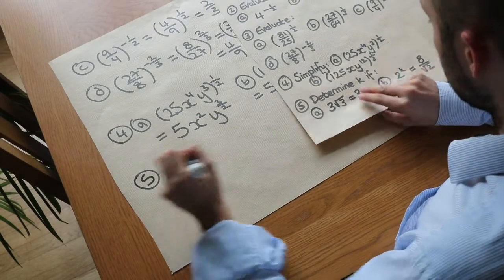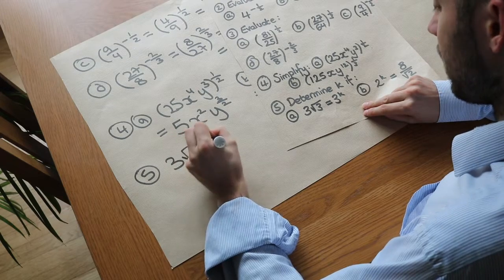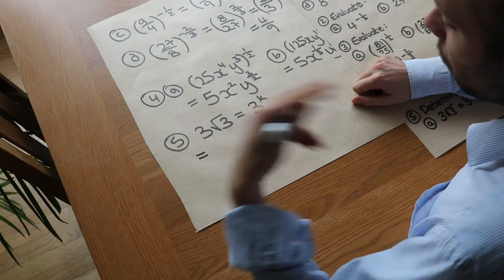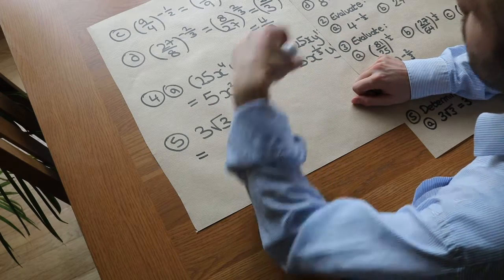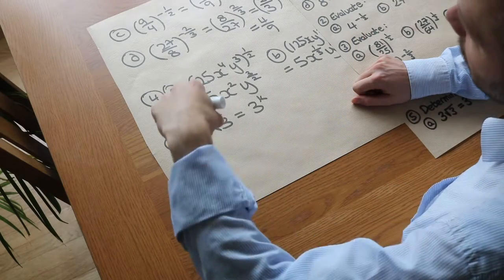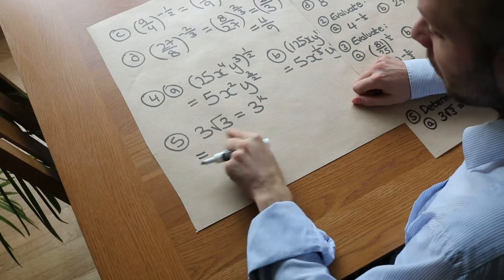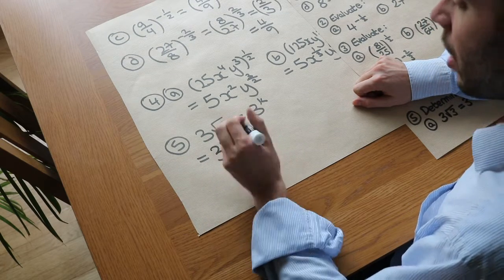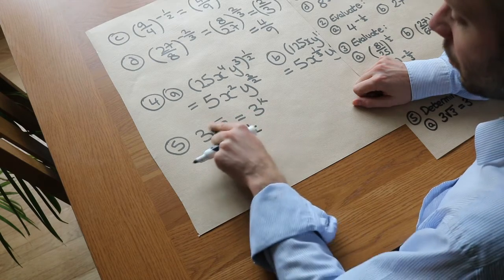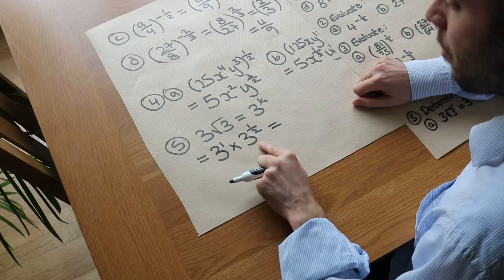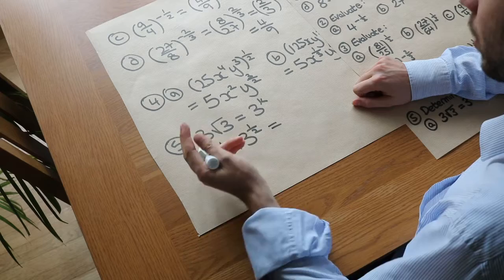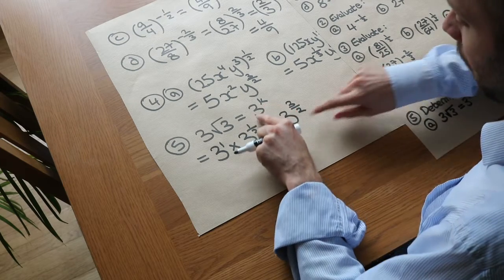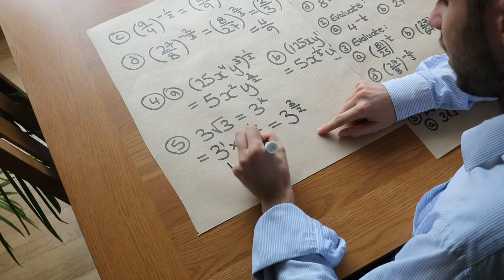Now find k if 3 root 3 equals 3 to the k. We write everything as a power of 3. That means 3 times root 3, which is 3 to the 1 multiplied by root 3, which is 3 to the half — since a power of a half gives the square root. When multiplying power expressions we add the powers: 1 plus a half is 3 over 2 as an improper fraction. So 3 to the 3 over 2 equals 3 to the k, and since the bases are the same, k equals 3 over 2.